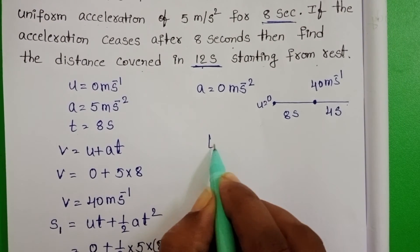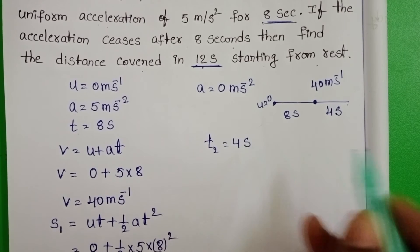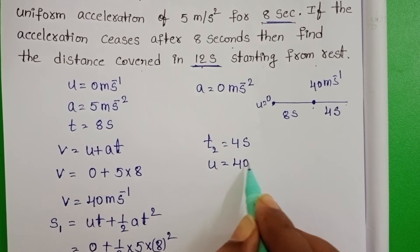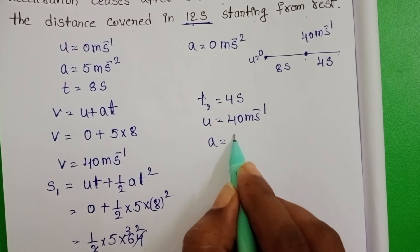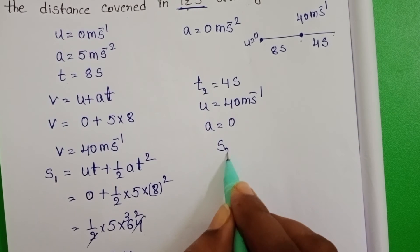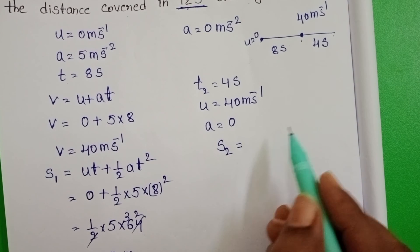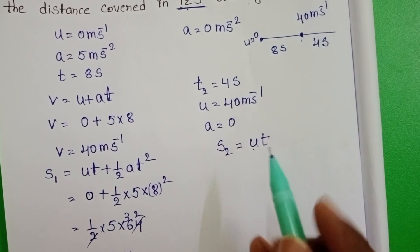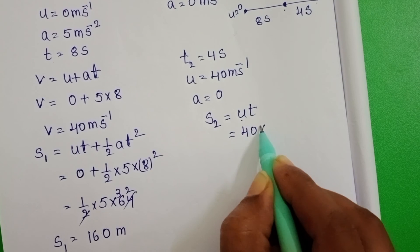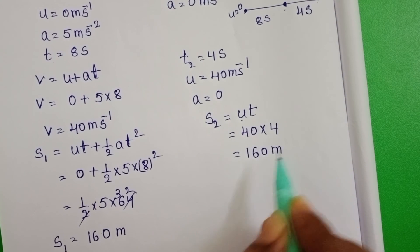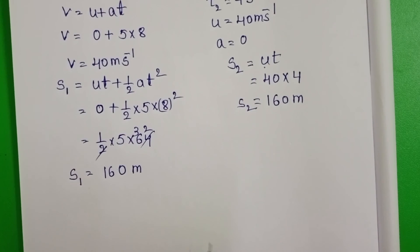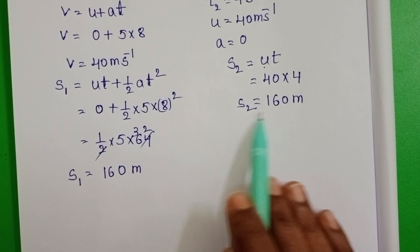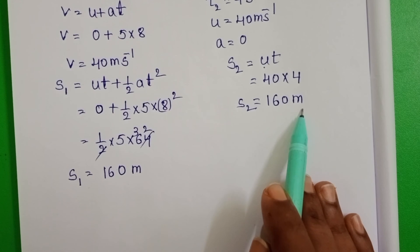In the next 4 seconds, T2 = 4 seconds. The initial velocity of the car is now 40 meters per second, and there is no acceleration — acceleration equals 0. So distance travelled equals speed × time. This speed is the final velocity at the end of 8 seconds, which is 40 meters per second, and time is 4 seconds. Therefore S2 = 40 × 4 = 160 meters. In the first 8 seconds, distance is 160 meters, and in the next 4 seconds with zero acceleration, the distance is also 160 meters.